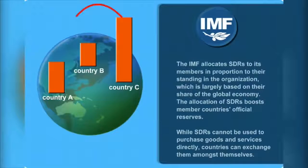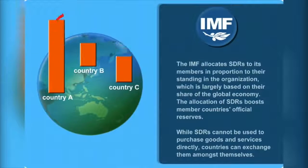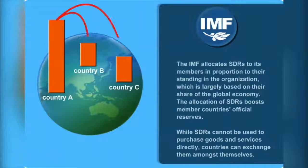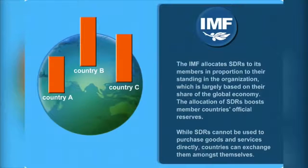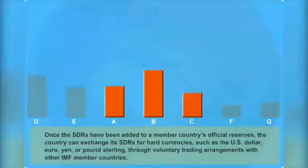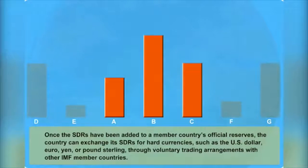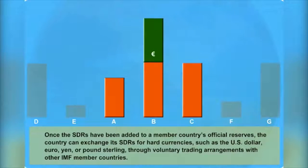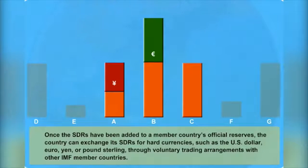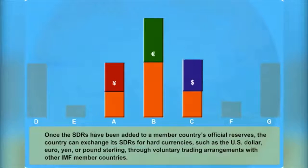While SDRs cannot be used to purchase goods and services directly, countries can exchange them amongst themselves. Once the SDRs have been added to a member country's official reserves, a country can exchange its SDRs for hard currencies such as the U.S. dollar, euro, yen, or pound through voluntary trading arrangements with other IMF member countries.